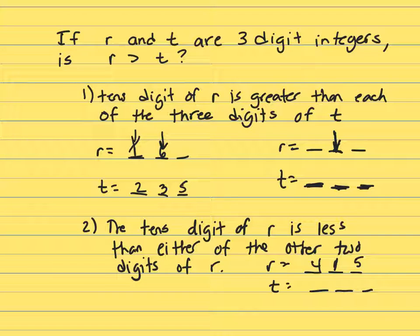All right, now clue two, put that in there. Here, the tens digit of R is less than the other two digits of R.